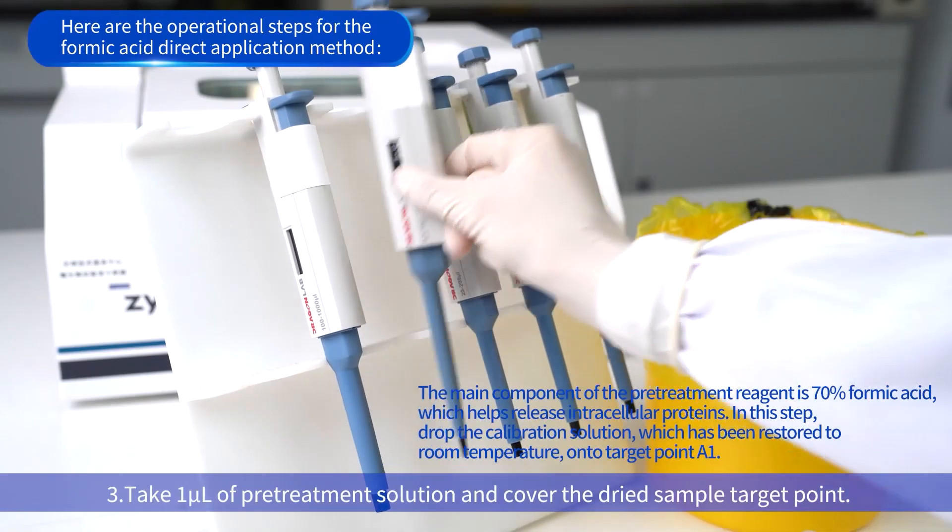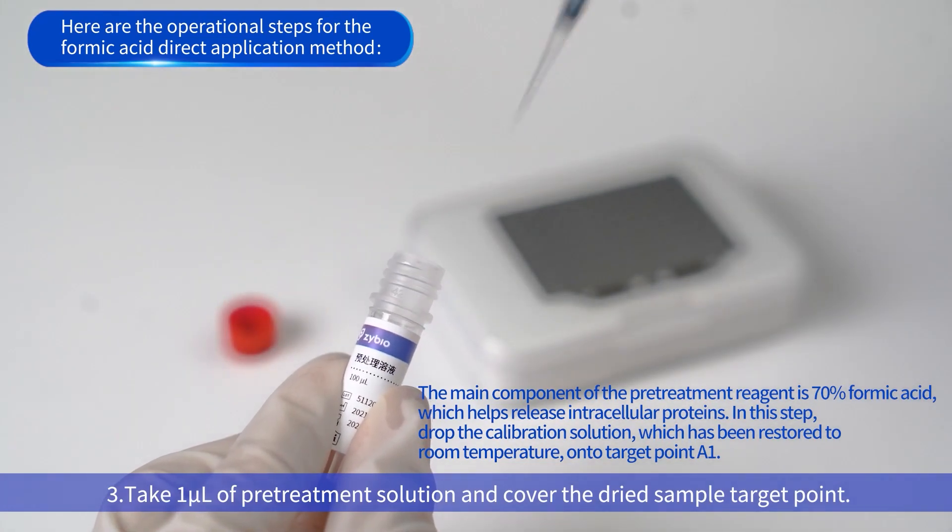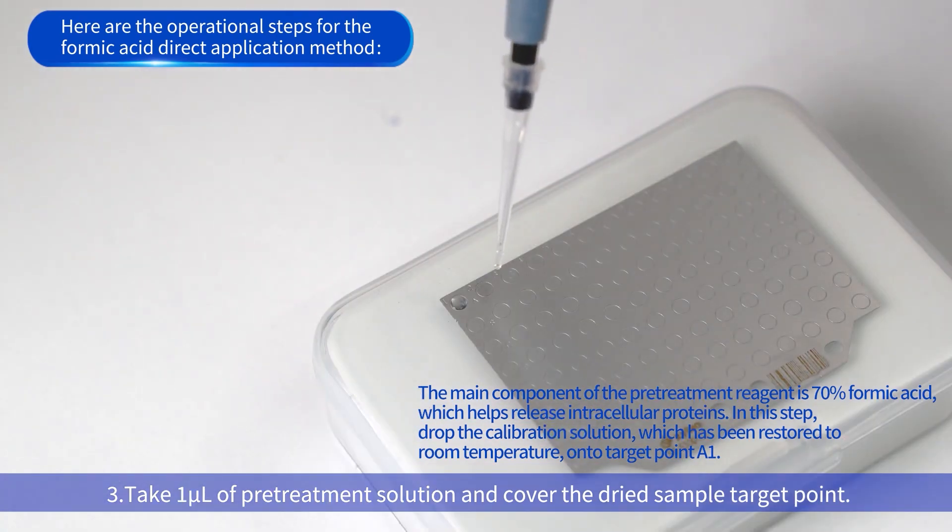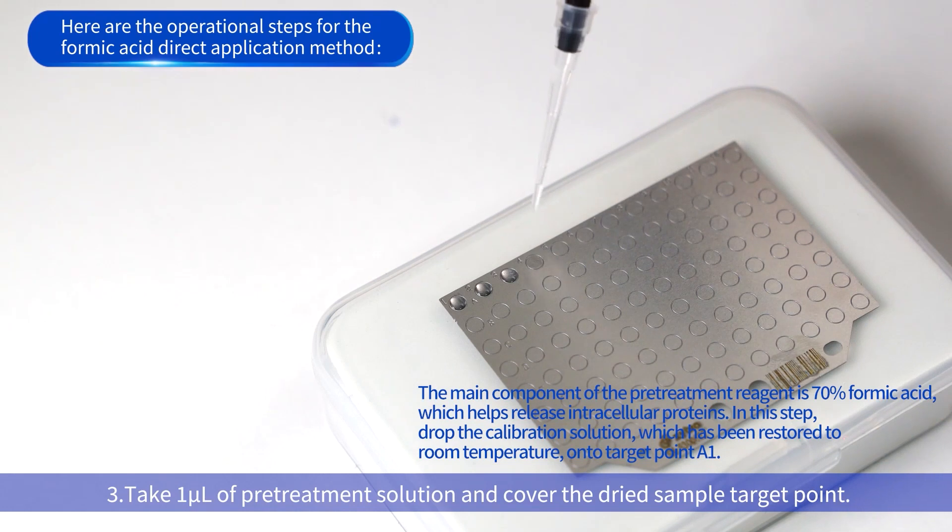Third, take one microliter of pre-treatment solution and cover the dried sample target point. The main component of the pre-treatment reagent is 70% formic acid, which helps release intracellular proteins. In this step, drop the calibration solution, which has been restored to room temperature, onto target point A1.